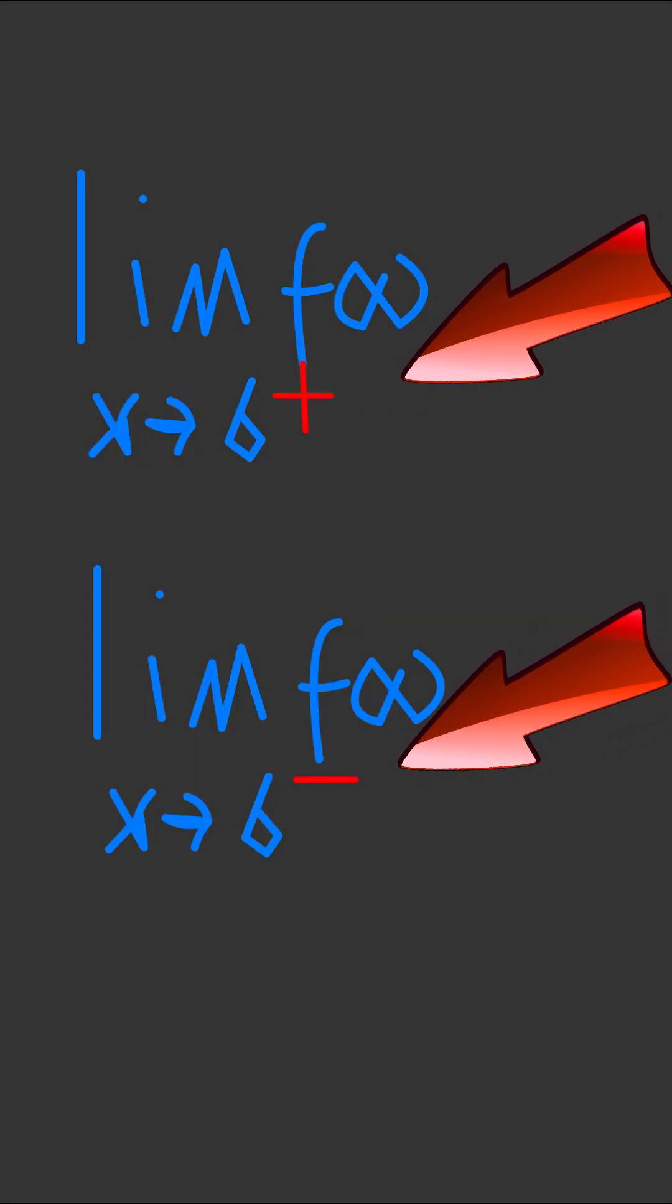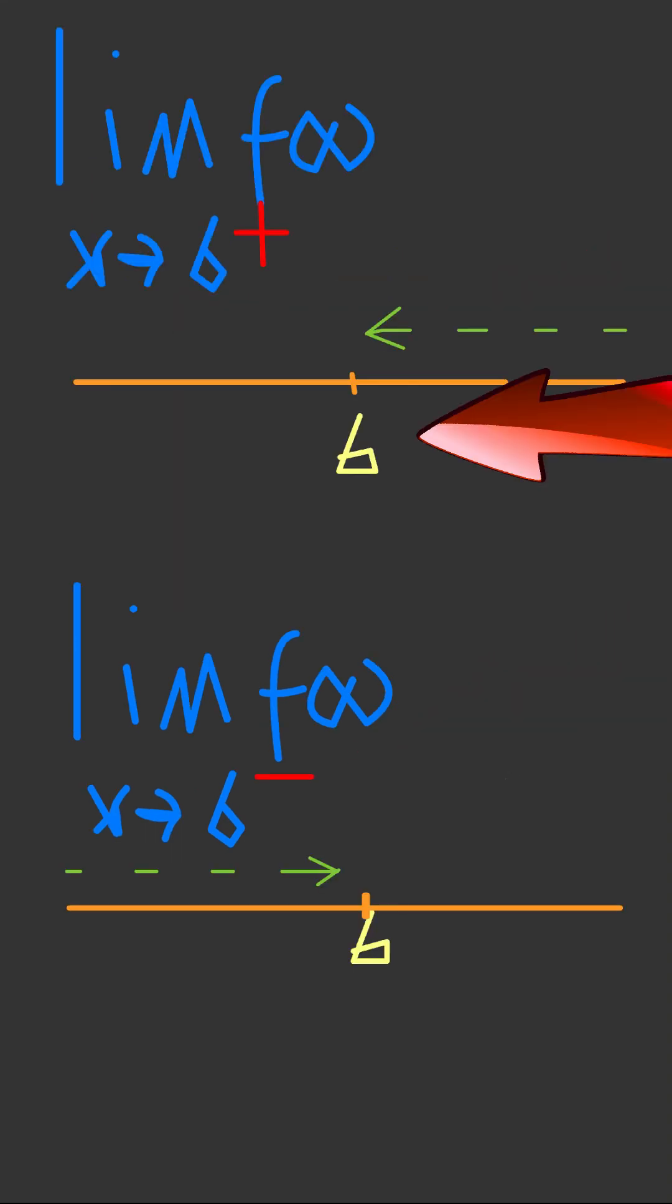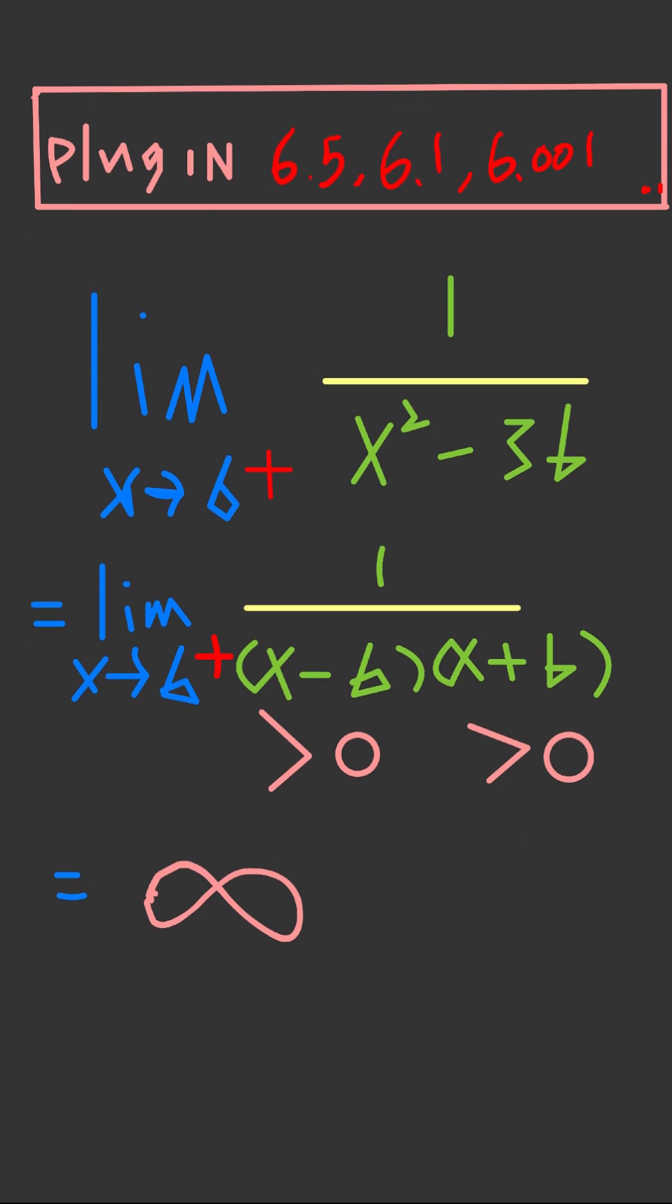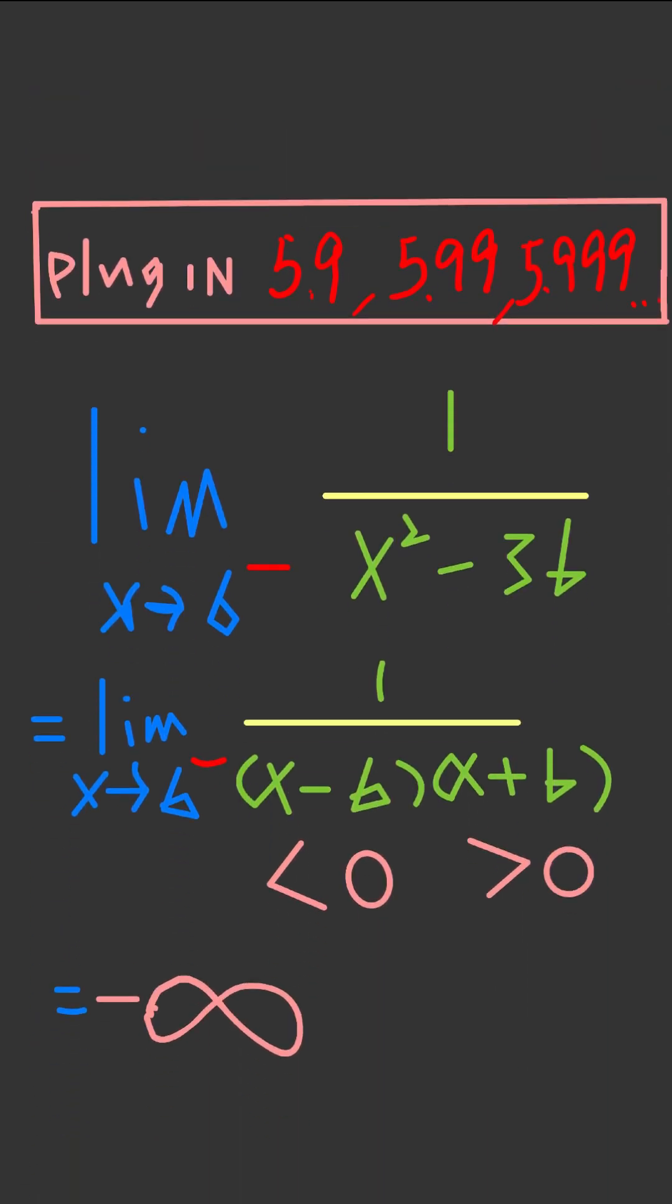First part: look at that thing though, it's not decoration. It's easy stuff. Six plus means zooming in from the big side, six minus means little number sneaking up. You can plug in a nearby number to find the vibe - positive or negative infinity, or just a number.